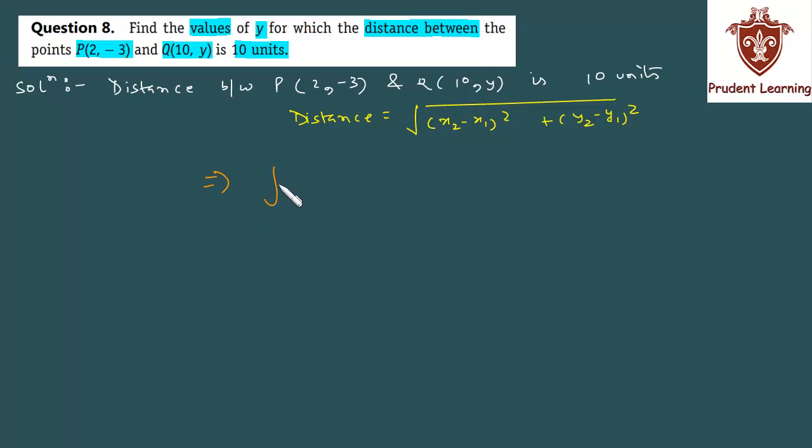Now, substituting the values in the given formula we have x2 as 10 minus x1 as 2, square it, plus y2 is y itself minus y1 which is minus 3, and square the whole thing. And equate this to 10, because the distance between these two points is given as 10.